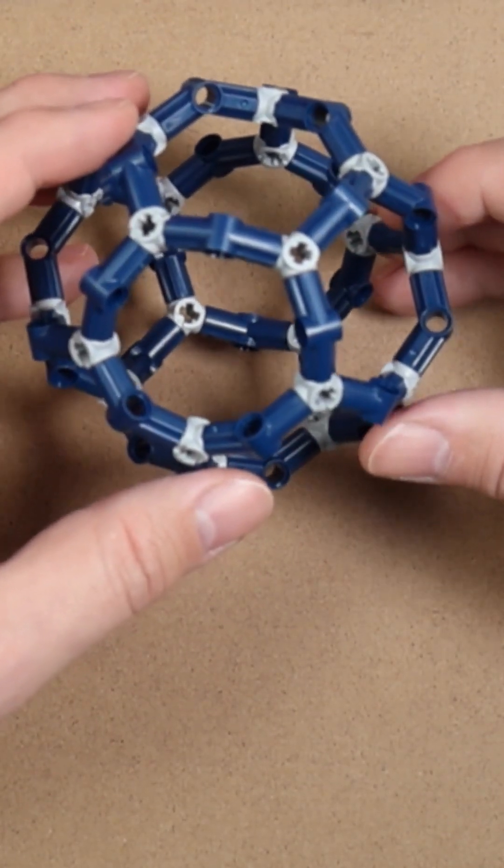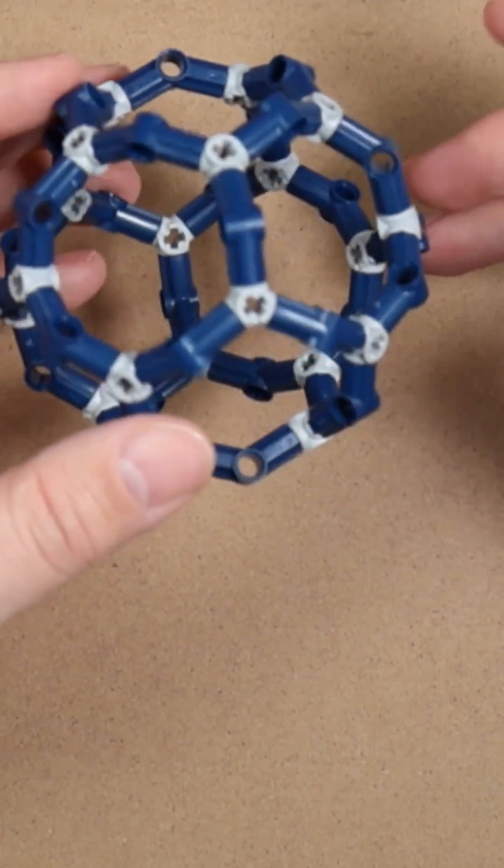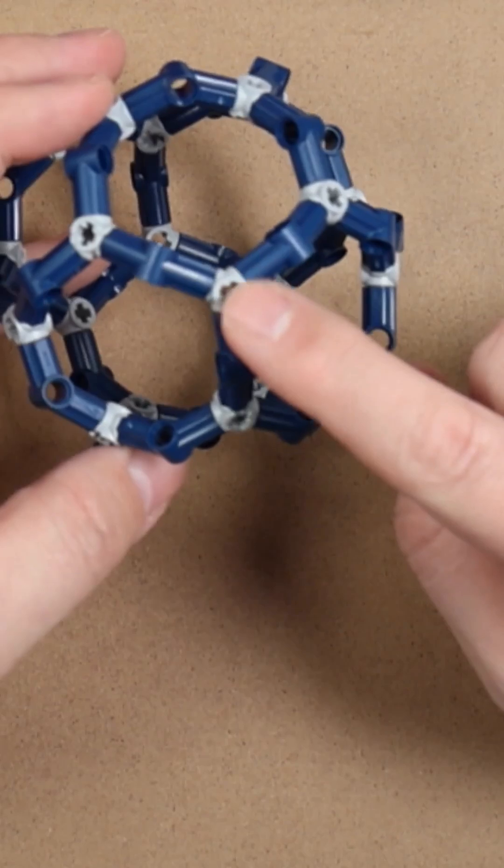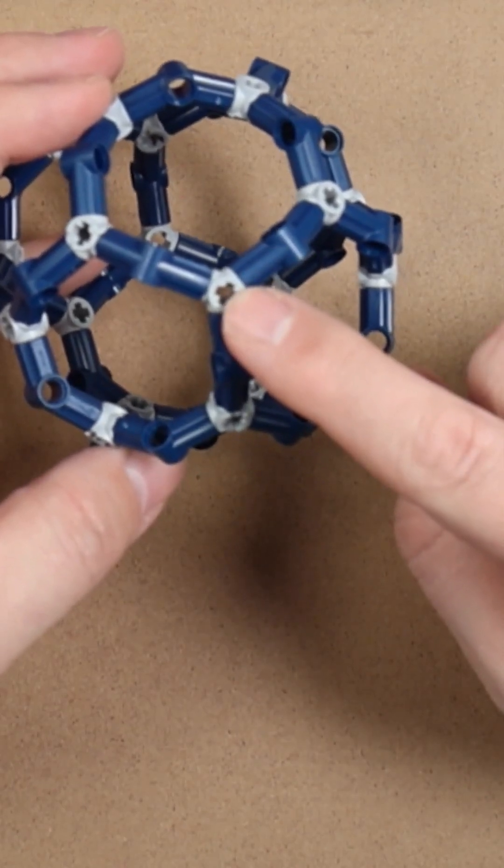And you're probably like, exactly, dodecahedron, isn't that what you were saying? Well, if you think about what's going on here, each one of these represents a face of the icosahedron.